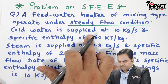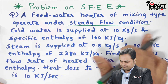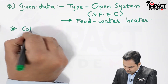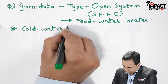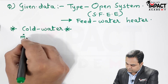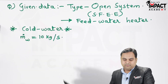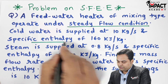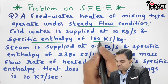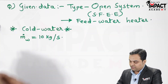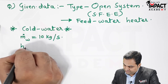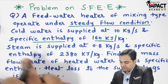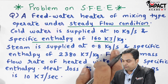Cold water is supplied at 10 kg per second, so the mass flow rate of cold water is given. The mass flow rate of cold water and specific enthalpy of the cold water is given as 160 kilojoule per kg, so specific enthalpy is denoted by H1.